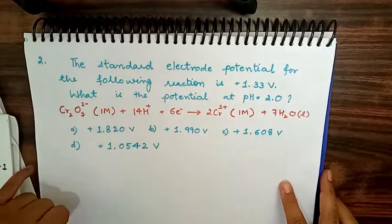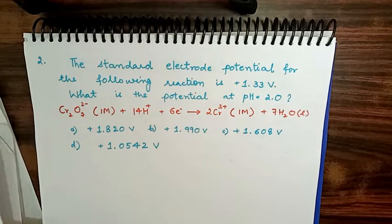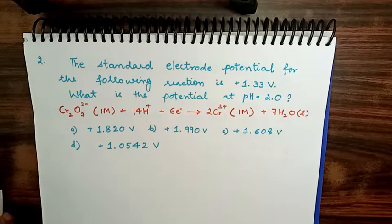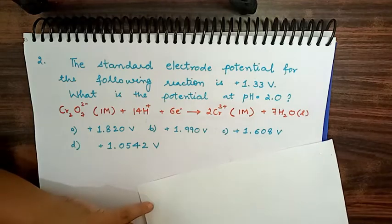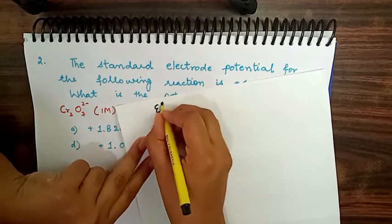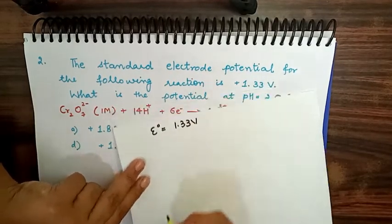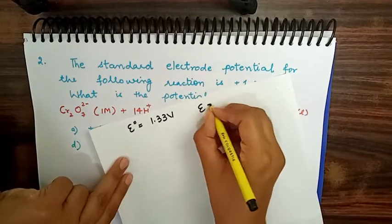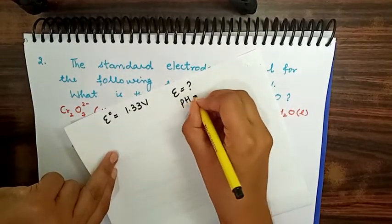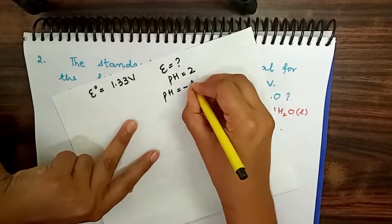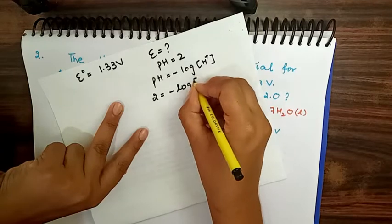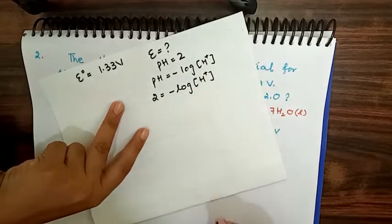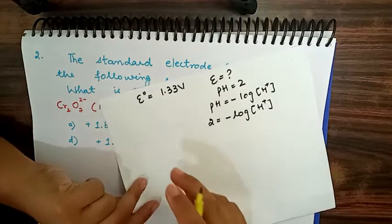The second question: the standard electrode potential for the following reaction is 1.33 volts — what is the potential at pH = 2? Standard electrode potential means E° = 1.33 V is given. We need to find E at pH 2. Using pH = −log[H⁺], pH = 2 means [H⁺] = 10⁻². Now we apply the Nernst equation since concentrations are given.